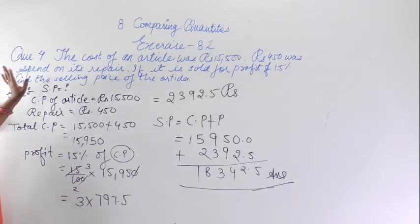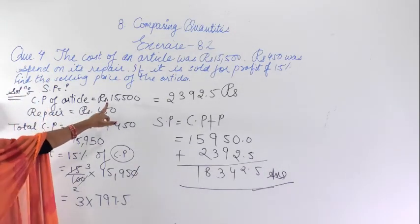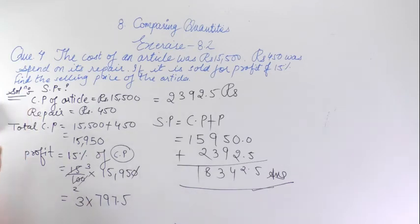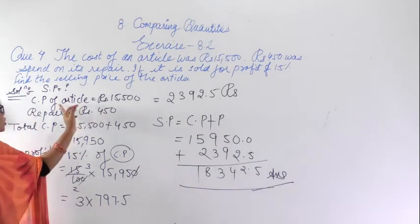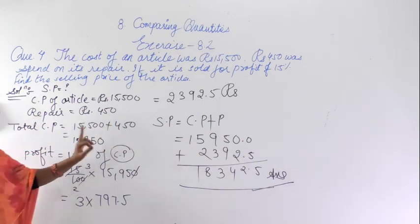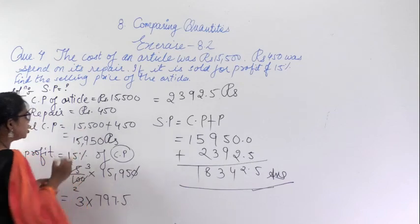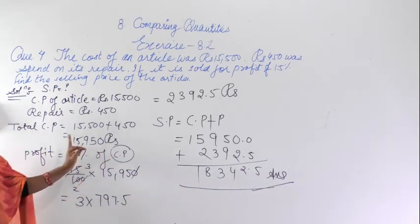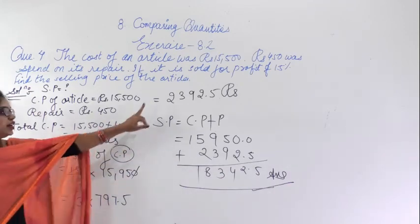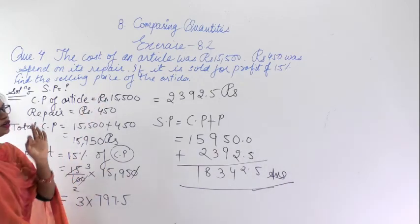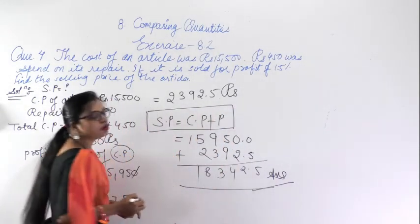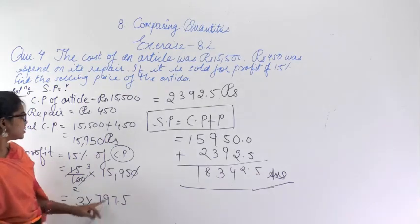In this question, the cost price of the article was given and Rs 450 was spent on repair. Total cost price equals cost price of article plus repair cost, giving us the total. It was given that after selling he got 15% profit. So 15% of the cost price gives the profit amount, and the selling price equals cost price plus profit. So the selling price is this much rupees.